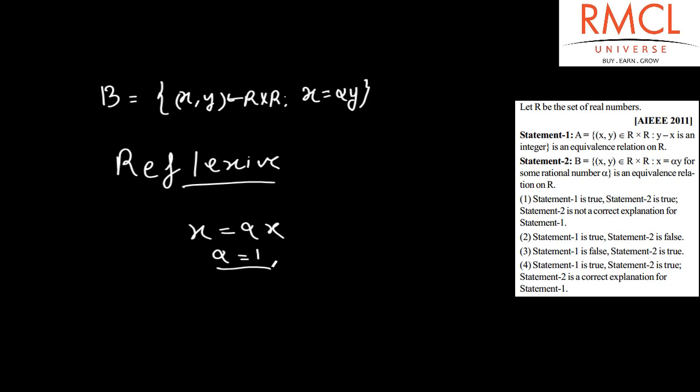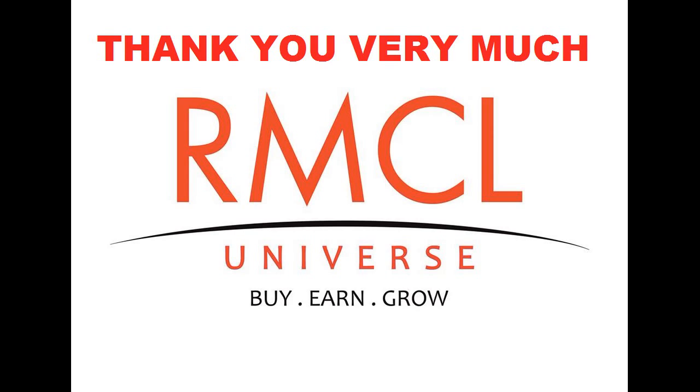Suppose if alpha equals 1/2, then X equals (1/2)X, and 1 is not equal to 1/2. So B does not satisfy the reflexive property. If it is not satisfying the reflexive property, then B is not an equivalence relation. Therefore, statement 1 is true and statement 2 is false. Option number 2 is correct.